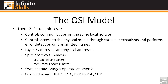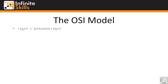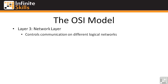We're picking up with our discussion of the OSI model at Layer 3. Layer 3 is the network layer. It controls communication on different logical networks, and this is where the abstraction between the physical and the logical comes into play.